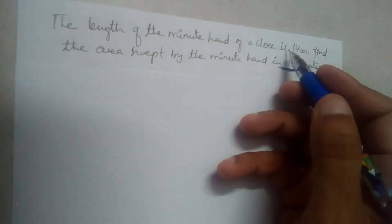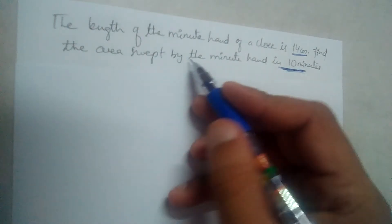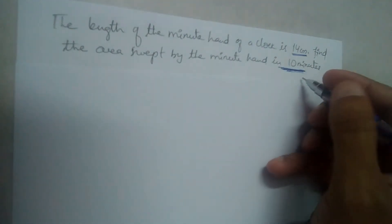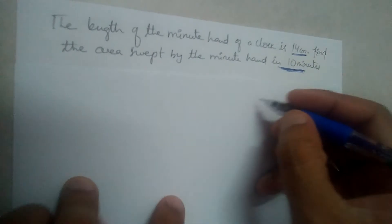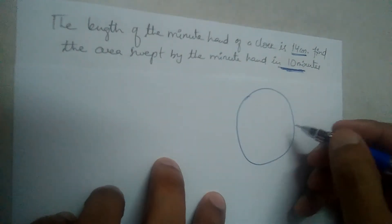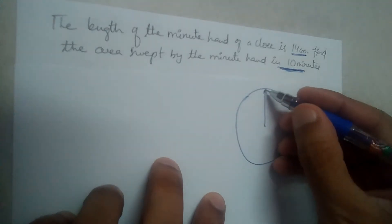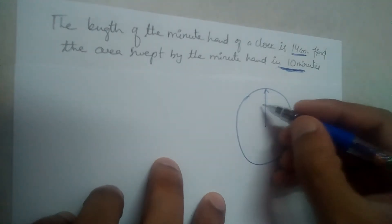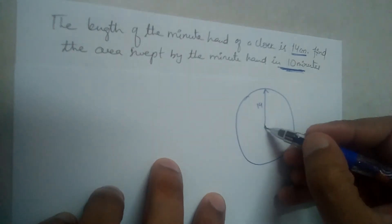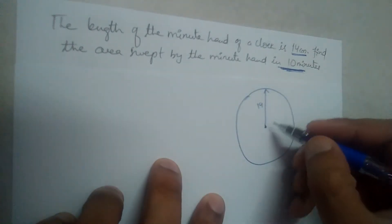The length of the minute hand of a clock is 14 centimeters. Find the area swept by the minute hand in 10 minutes. The minute hand is 14 centimeters long, which means the radius of the circle is 14 centimeters.